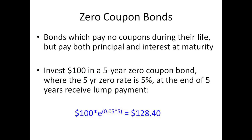Zero-coupon bonds are bonds that pay no coupons during their life but pay both principal and interest at maturity. You don't receive occasional interest rate payments — you just receive a lump sum at the end. For example, if you invest $100 in a five-year zero-coupon bond where the five-year zero-coupon interest rate is 5%, at the end of five years you would receive a lump sum payment of $128.40.